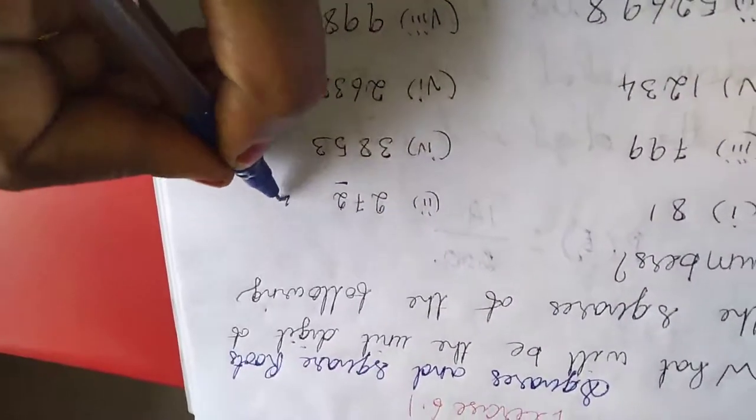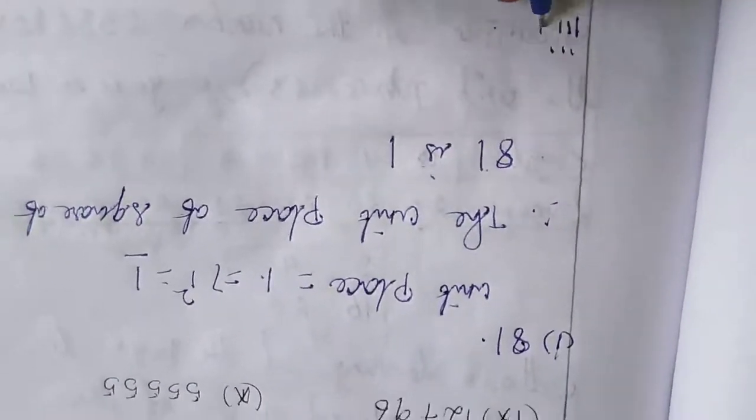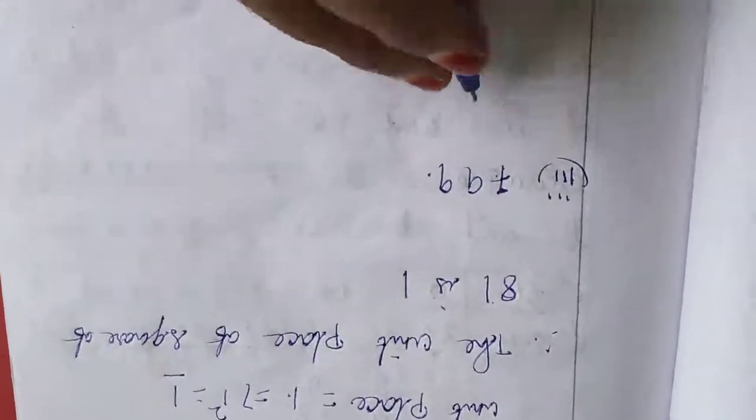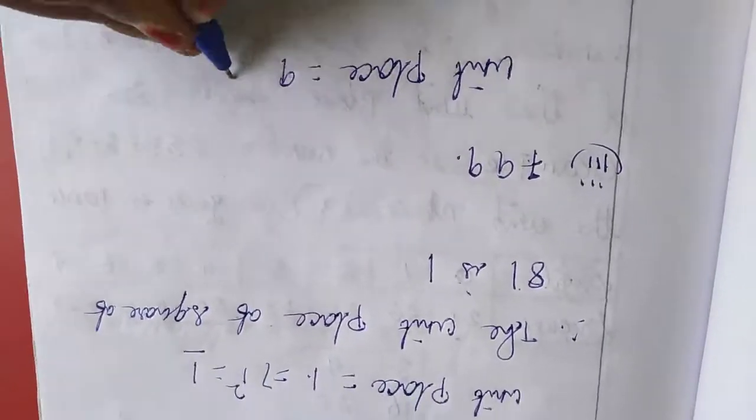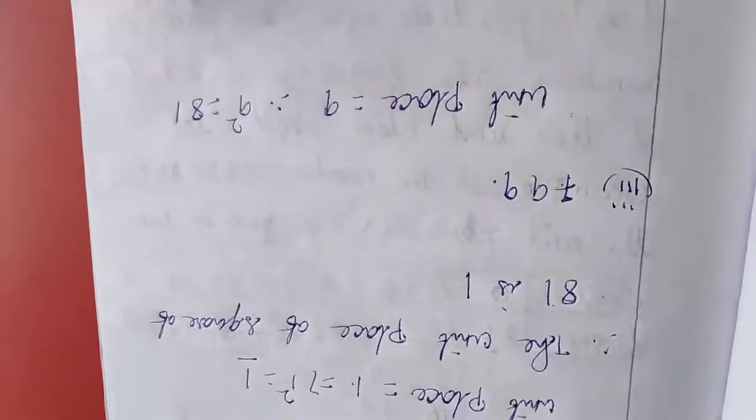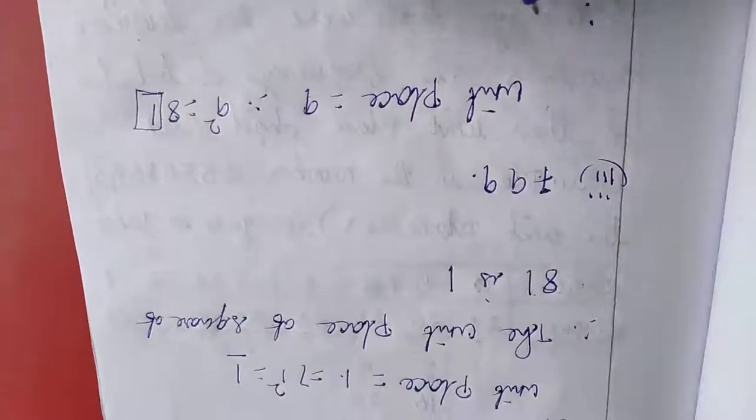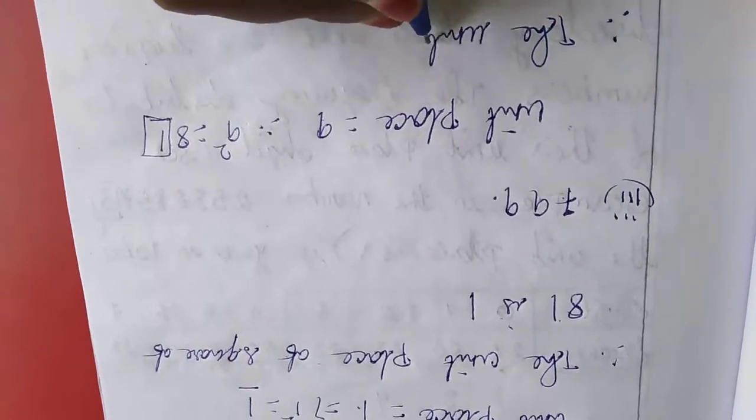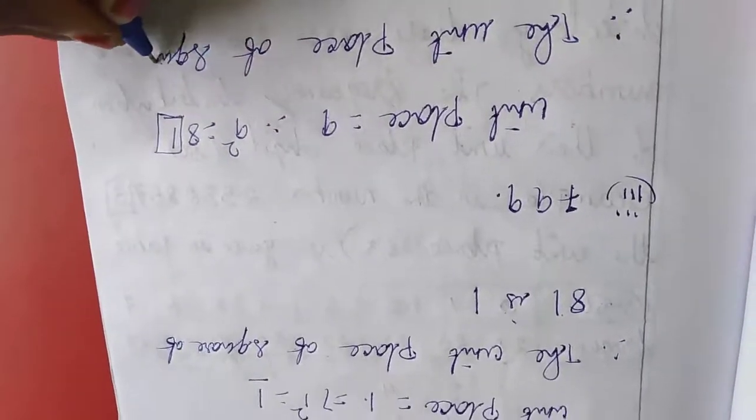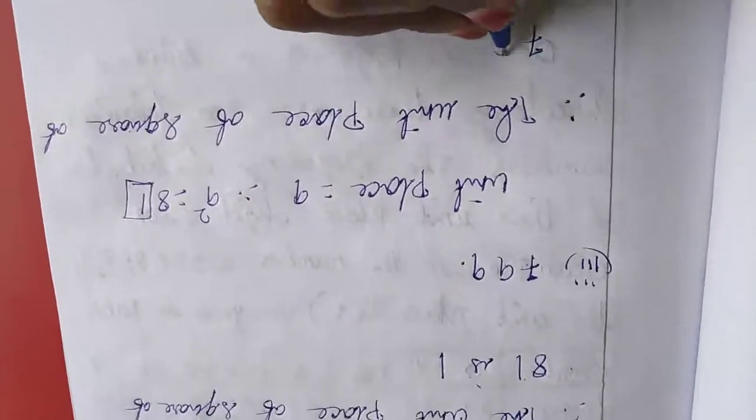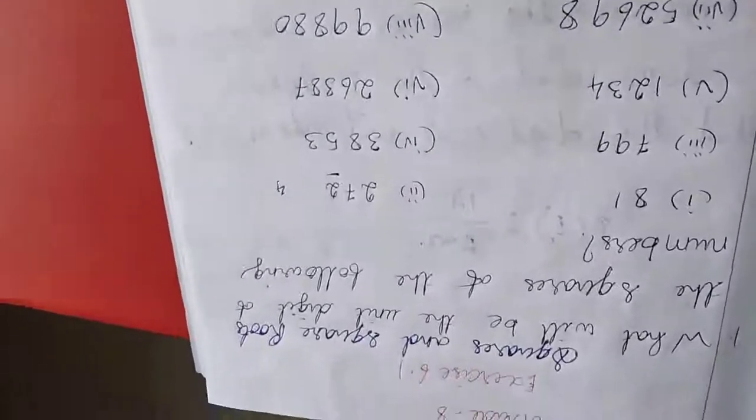See here for next sum, 2 square is 4, so unit place will be 4. Here 9, so in this one I am writing here. 799, unit place equal to 9. Therefore, 9 square equal to 81. Here what is the unit place? 1, so the unit place will be 1. Thus, the unit place of square of 799 is 1. This is the answer.